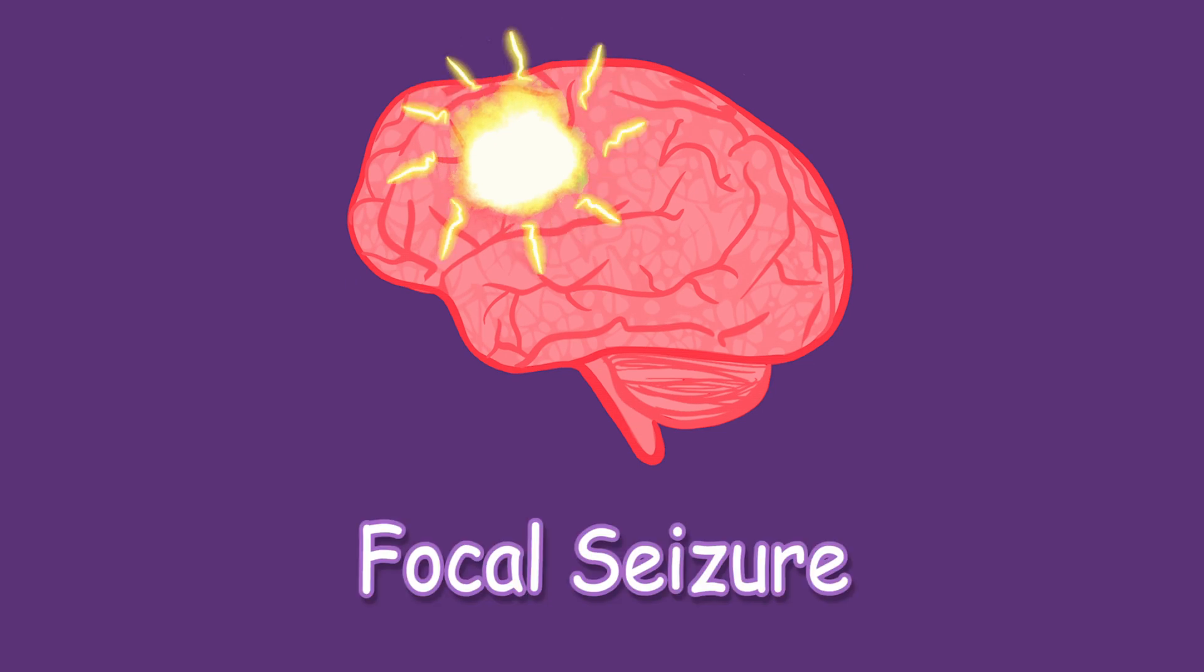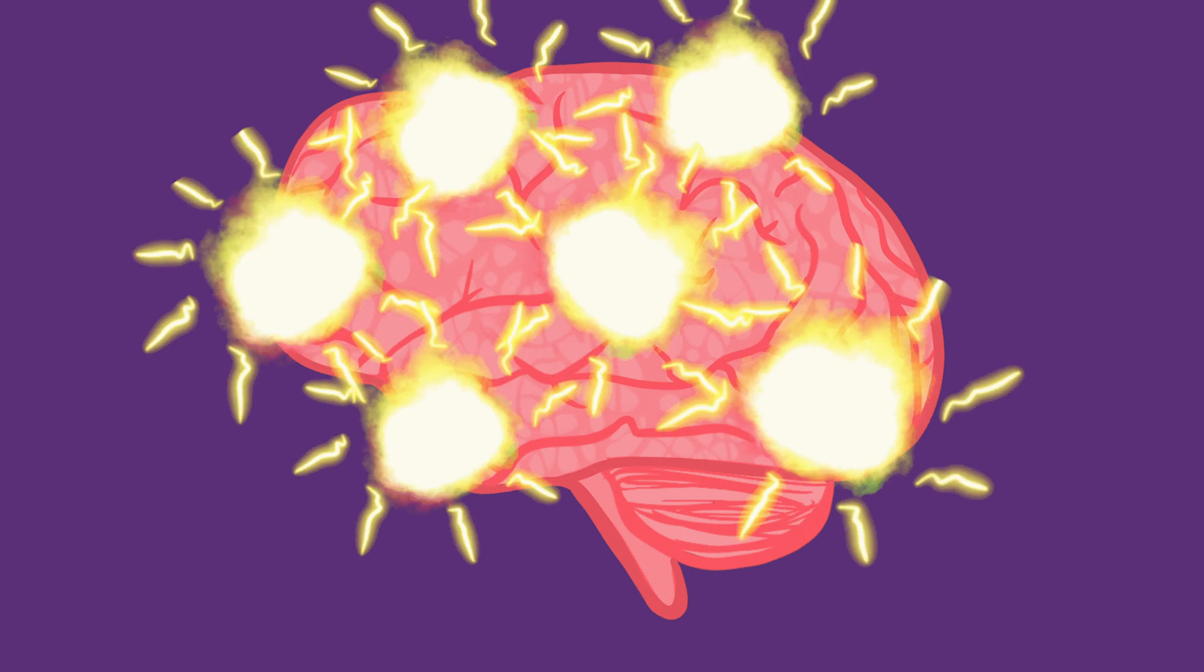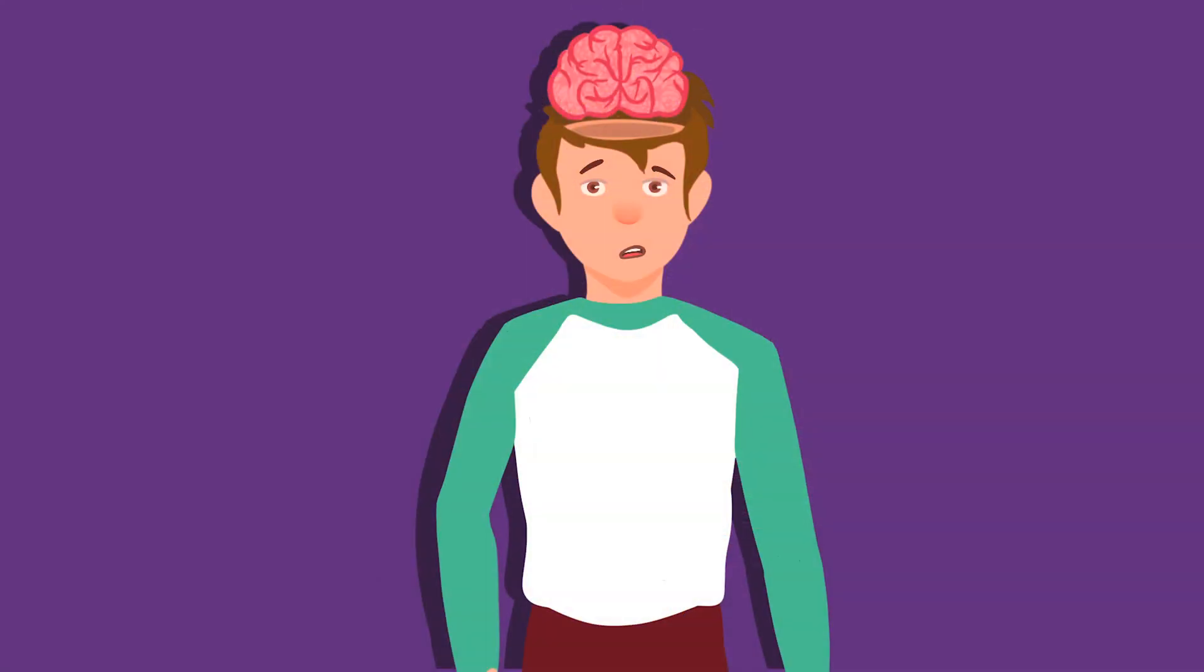And these would be called a focal seizure. However, if the neuronal malfunction spreads across the brain, or is already all over the brain from the start, the seizure shows all over the body. And this may present in multiple different ways.